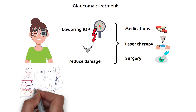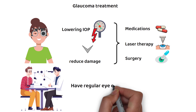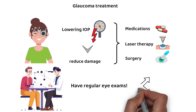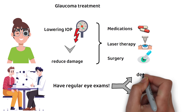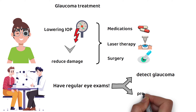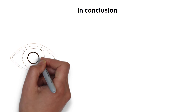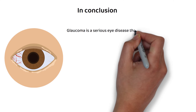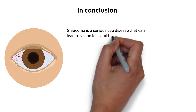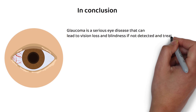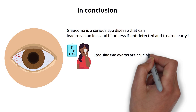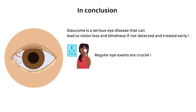It is important for people who are at increased risk for glaucoma to have regular comprehensive eye exams. Regular eye exams can help detect glaucoma early and prevent vision loss. In conclusion, glaucoma is a serious eye disease that can lead to vision loss and blindness if not detected and treated early. Regular eye exams, especially for those at increased risk, are crucial for early detection and preservation of vision.